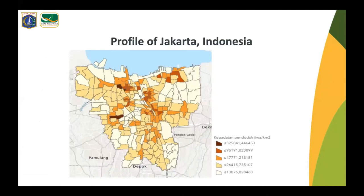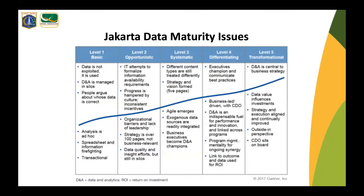Jakarta is one of 34 provinces in Indonesia and acts as the capital city, consisting of six districts with over 10 million people. In today's digital environment, the importance of data is greater than ever, and it's critical that organizations utilize their data to make informed decisions in real time. For the Jakarta Department of Health, lacking data is not the issue — determining how to prioritize data and put it into action is the common challenge.